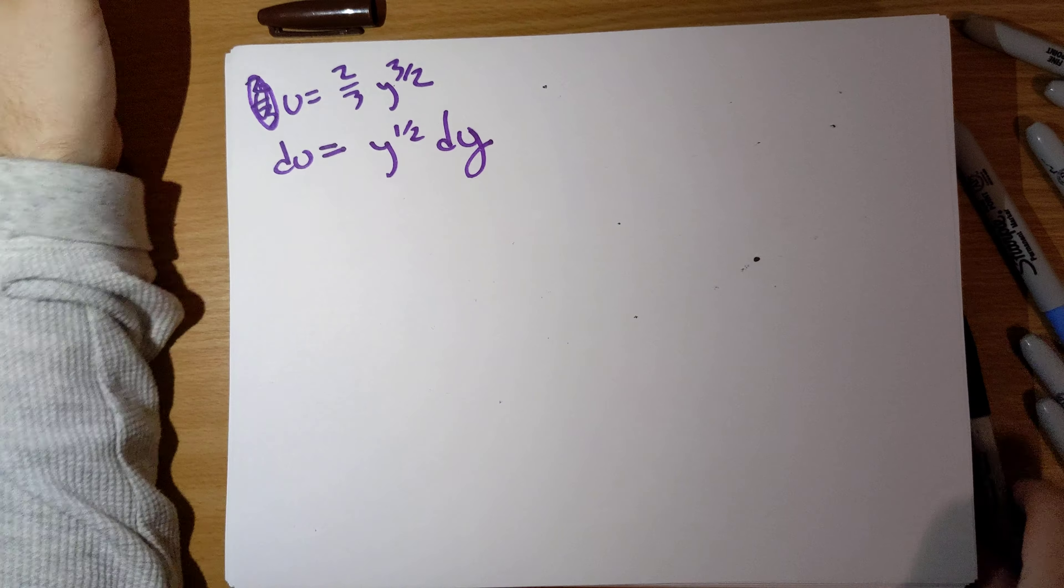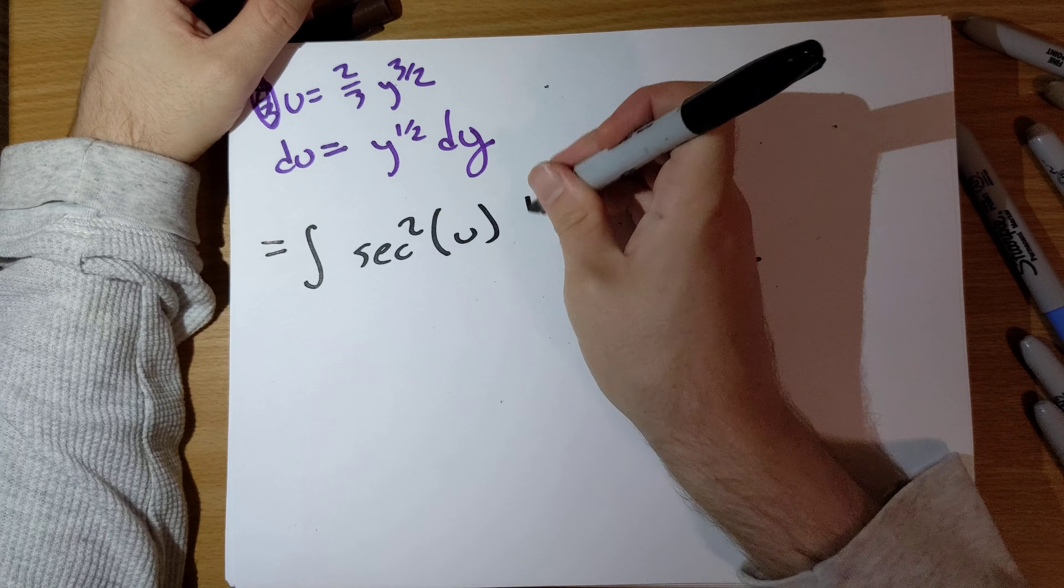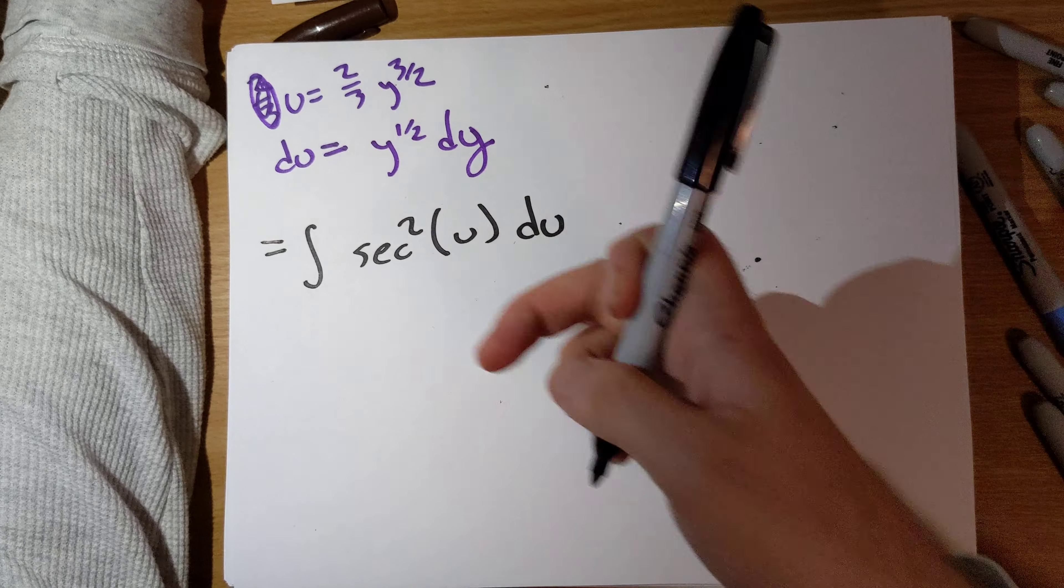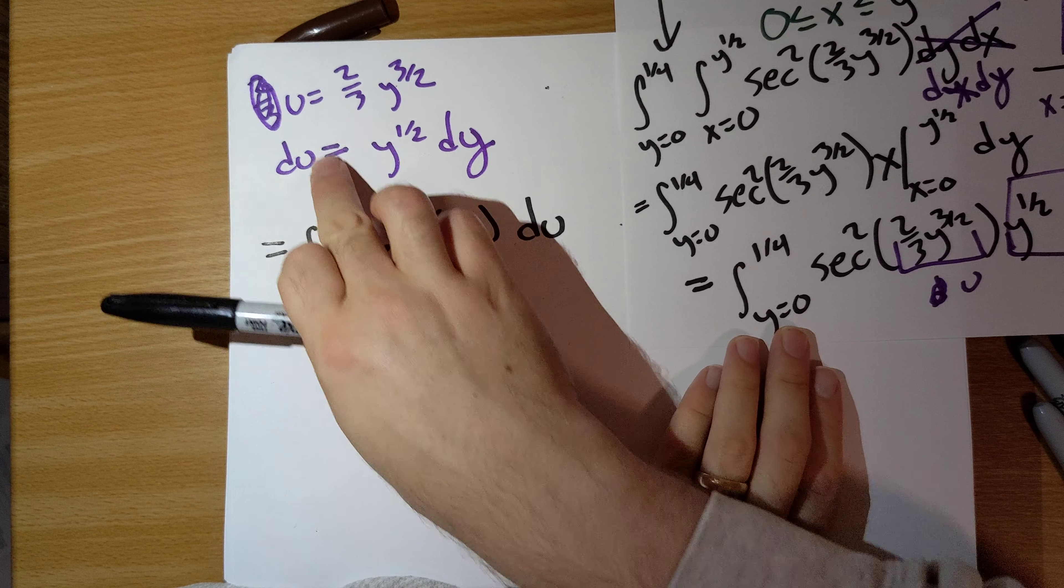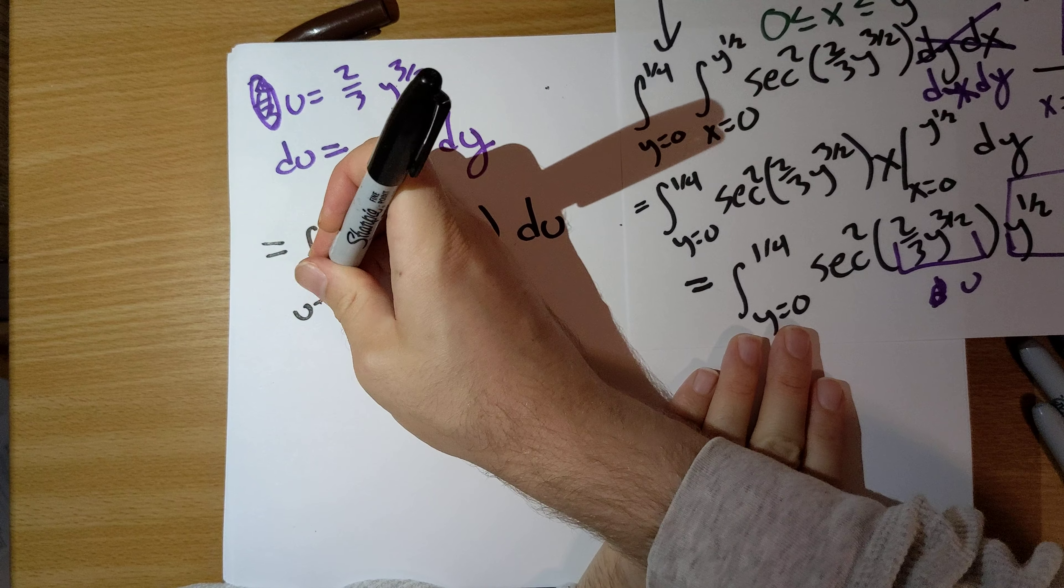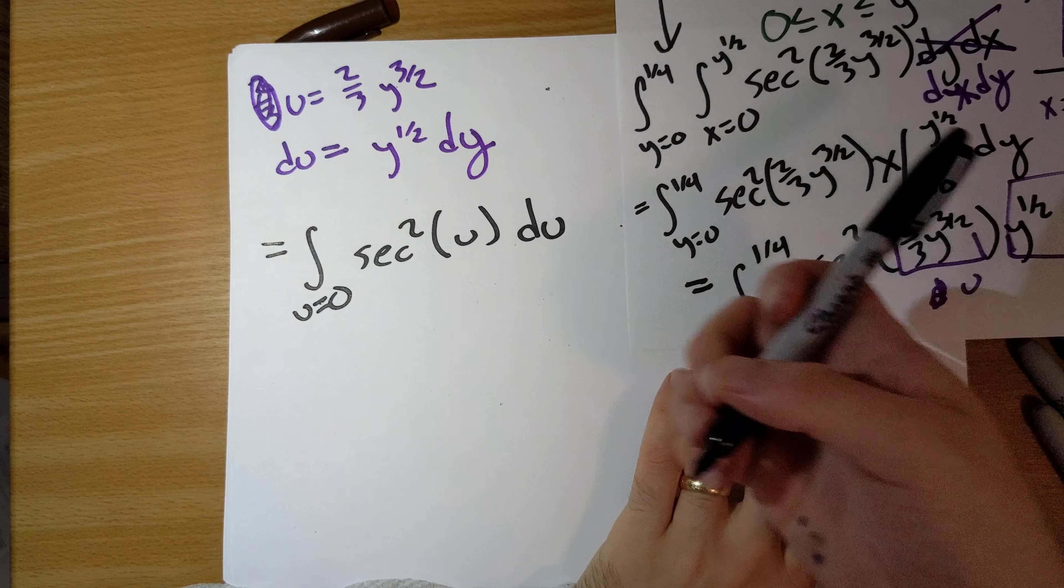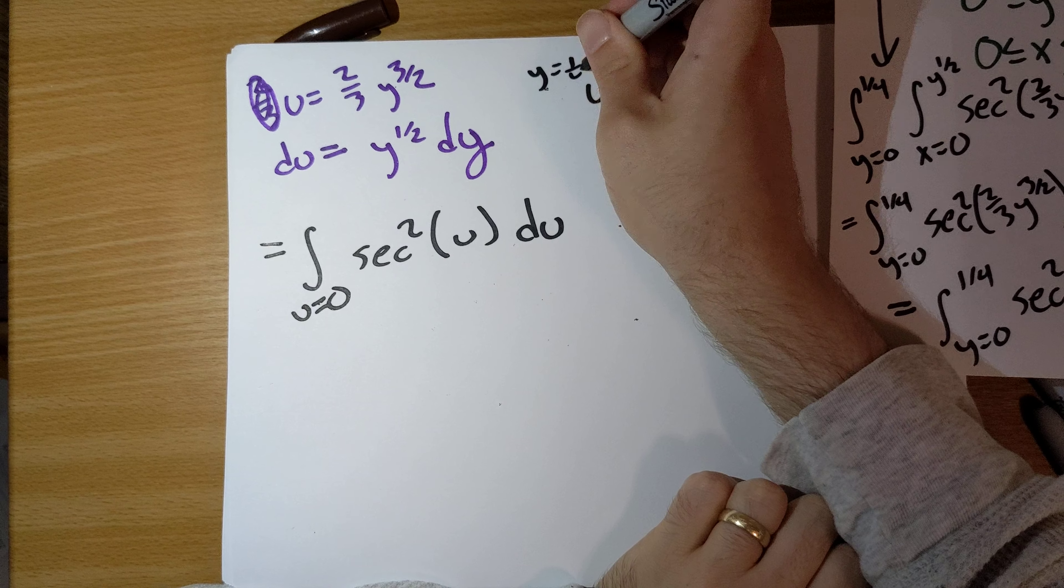So now our integral is the integral of secant squared u du. The last thing we have to do here is change the bounds. When y is 0, u is 2/3 times 0 to the 3/2, that's 0. When y is a quarter, if y equals a quarter...